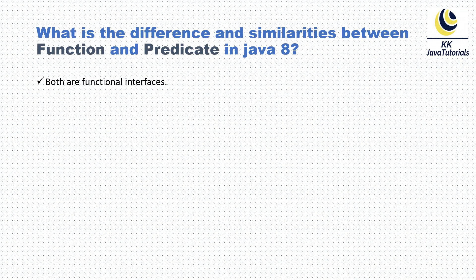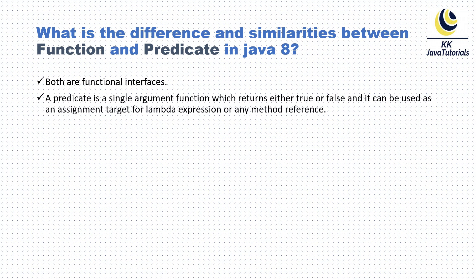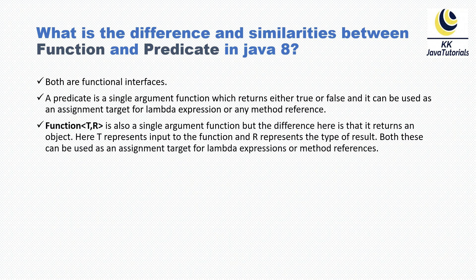Let's try to understand the concept first and then we'll see an example as well. When we talk about similarities, the first similarity is that both are functional interfaces, meaning both can be used as a target for lambda expressions. Now, a Predicate is a single-argument function which returns either true or false, and it can be used as an assignment target for a lambda expression or method reference.